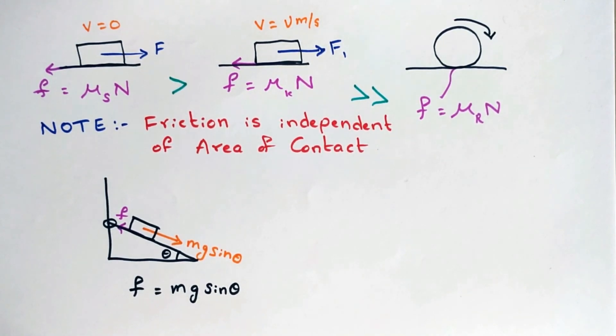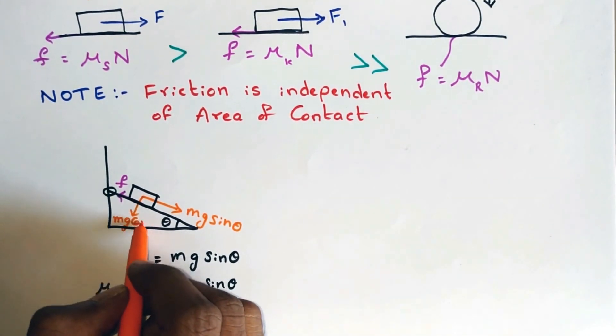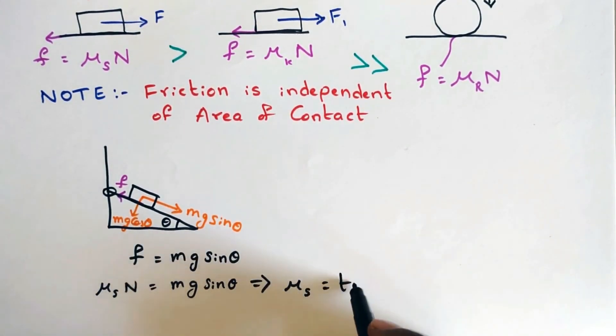So, note that theta angle and substitute F is equal to mu s into n. And the normal reaction is equal to mg cos theta. So, you can get mu s is equal to tan theta.